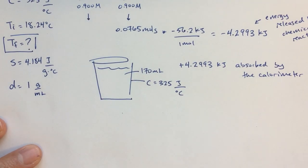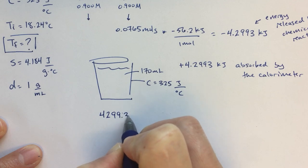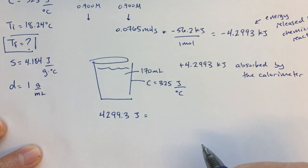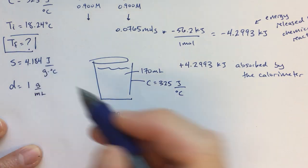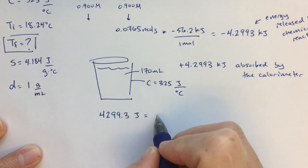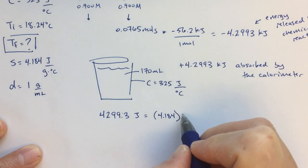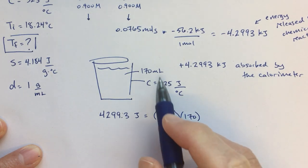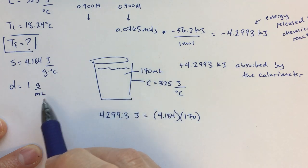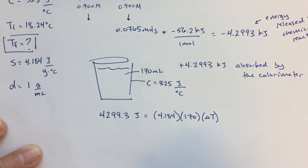So to do that, what I would do is I'm going to convert this 4.2993 into joules. That would be 4,299.3 joules of energy. And that's going to equal my water solution absorbing that energy and also the calorimeter absorbing the energy as well. So that's going to equal 4.184, so here I'm using the Q equals S M delta T type equation. 170 is going to be my mass. So that's going to be the mass of the water. One gram per milliliter. So 170 milliliters, 170 grams. And I'm going to put in delta T. So we could do T final minus T initial. But I think for me, I always just like doing delta T if we can.